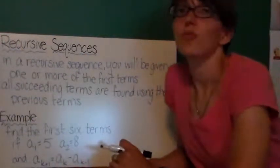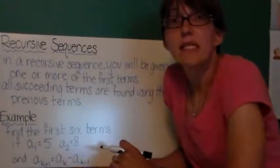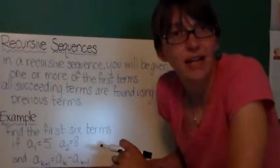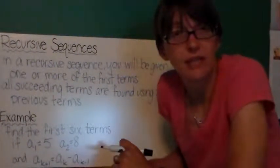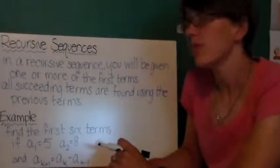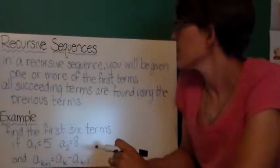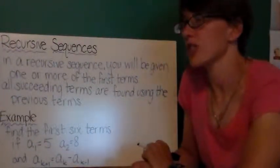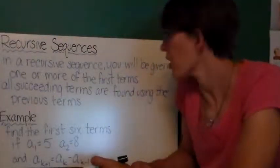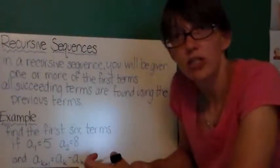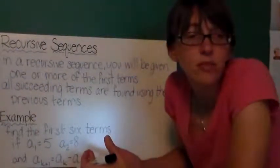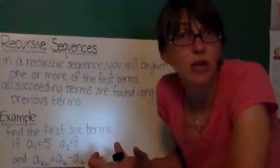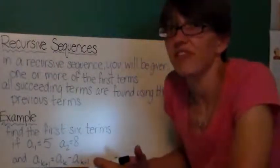Some sequences are defined recursively. And this is similar to the idea of recursion in computer science and programming where you go back and you do the same thing, and then you go back and you do it again, and then you do it again, and then you do it again. And if you're unlucky, you're stuck in an endless loop. Well, recursive sequences are like that endless loop. So in a recursive sequence, you're going to be given one or more of the first terms. All succeeding terms are found using the previous terms. So I may be given like the first three terms of a sequence, and they say, get the next term. Every time you're going to add the last two numbers on the list. Okay. Naturally, you can fit in a sequence this way.